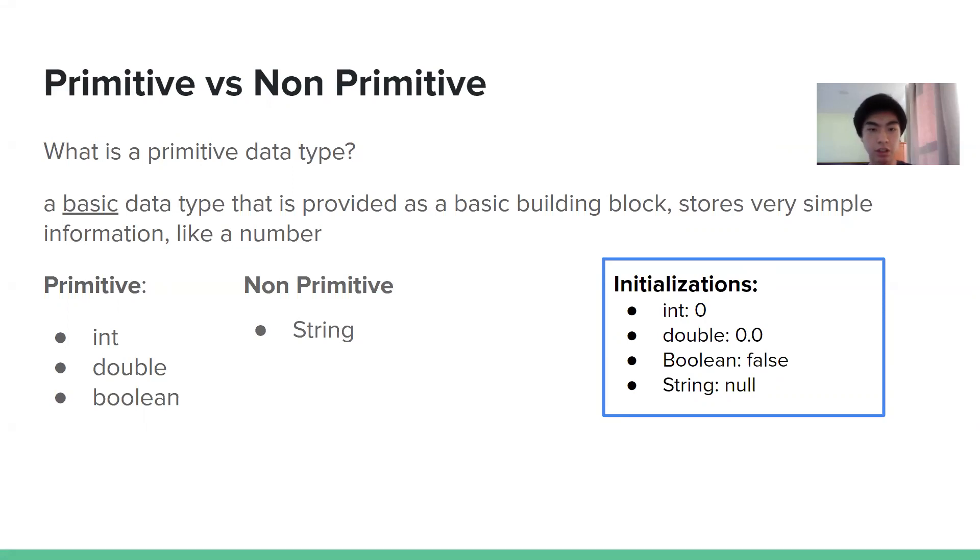And they are basic building blocks for more complicated data types. So for example, a string is non-primitive. It is more complicated than int, double, and Boolean, which are all simple, and that's why they're primitives. So string is more complex, and it is actually built off of primitives. So that is why, that is how we distinguish between primitives and non-primitives. It's that primitives are the building blocks for other more complicated data types.